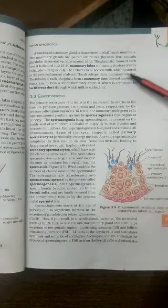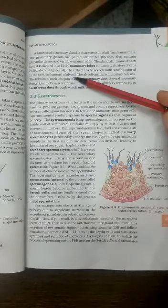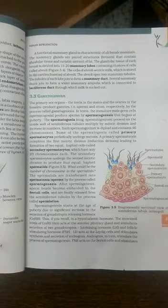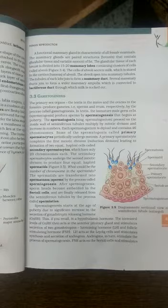The cells of the alveoli secrete milk which is stored in the cavity of the alveoli called the lumen. The alveoli open into mammary tubules. From the alveoli, the milk goes into the cavity, and from the cavity it goes into the mammary tubule.